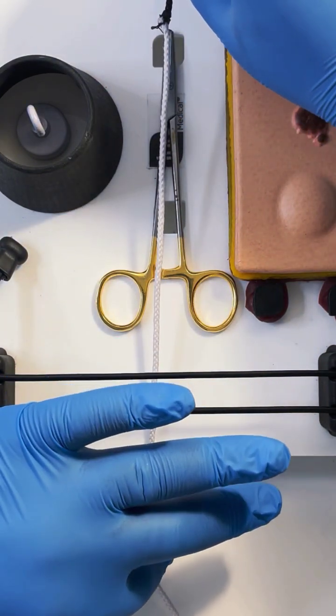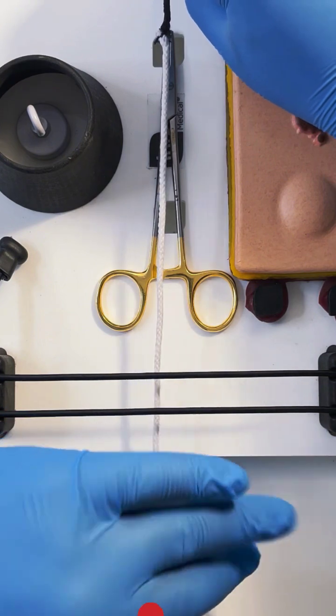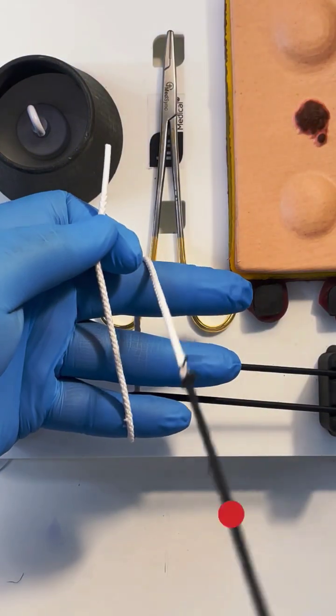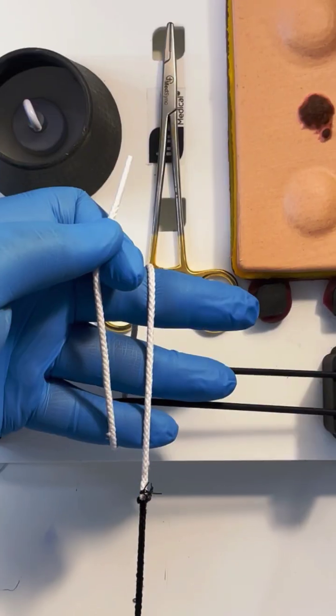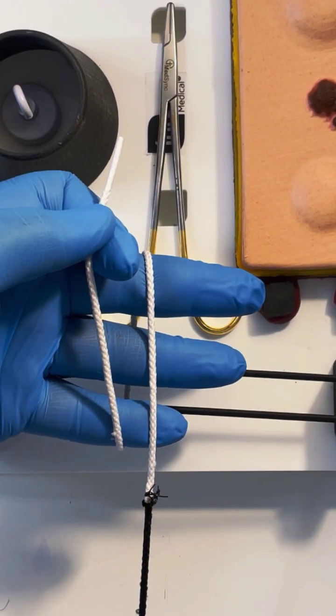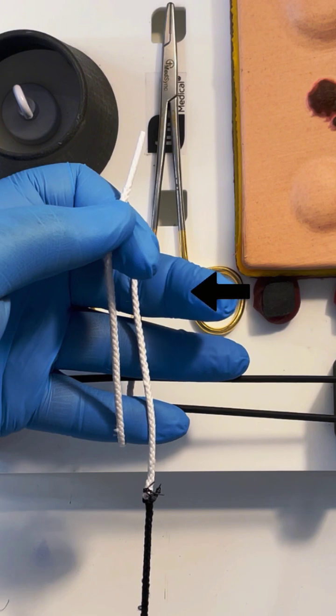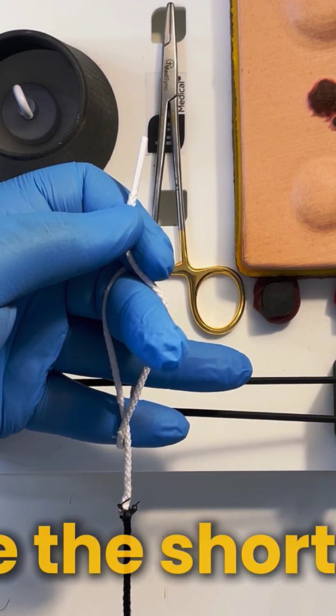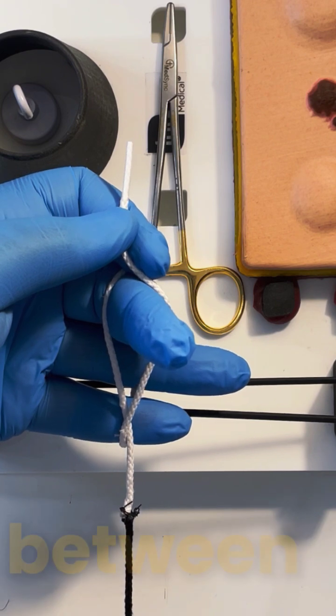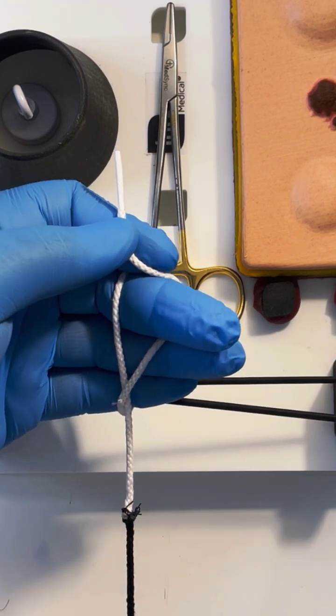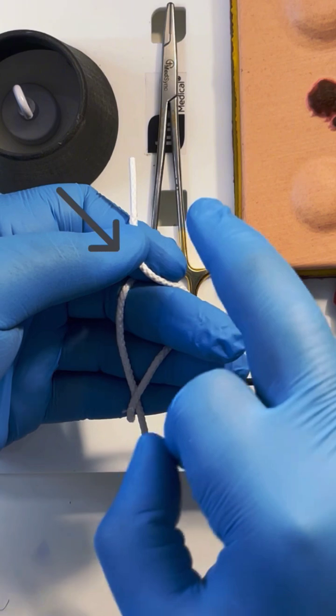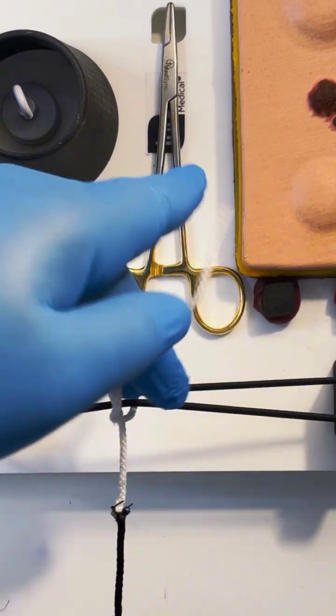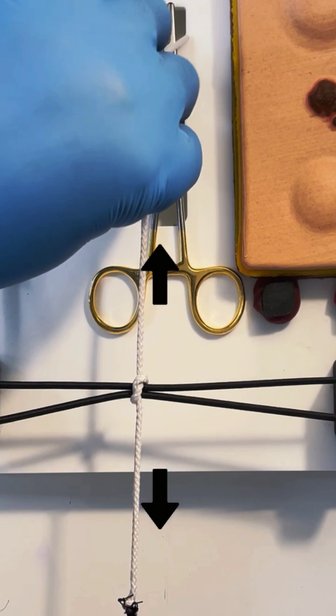You pick up the short end between thumb and index, turn your hand over. Lay the long end parallel to the short. Watch closely. Bend your middle finger over the long under the short. Squeeze the short suture between your middle and ring. You now let go between your thumb and index and pull the short suture between the loop.